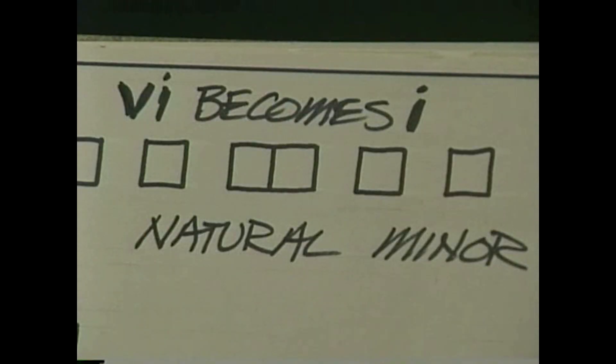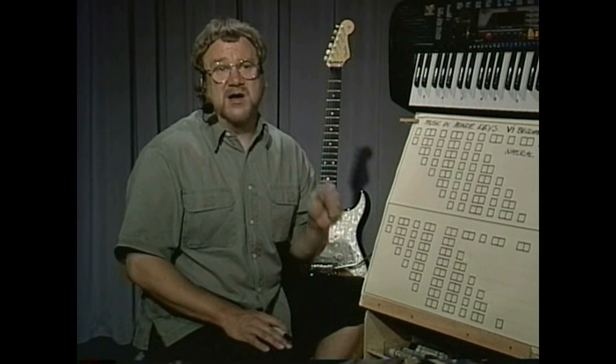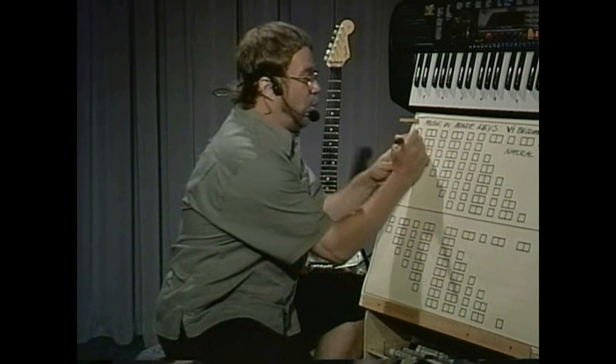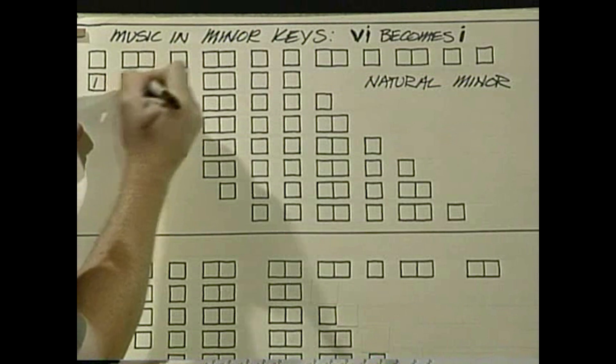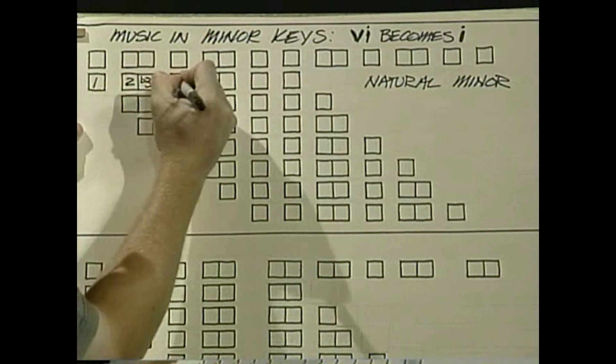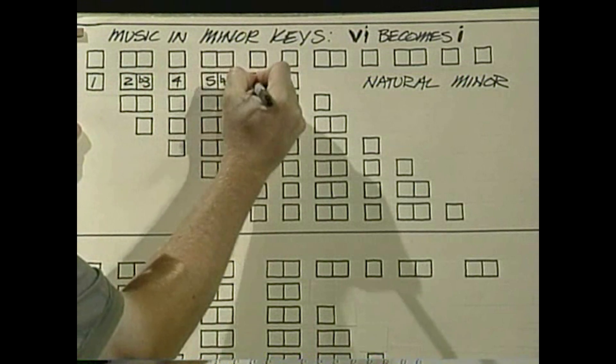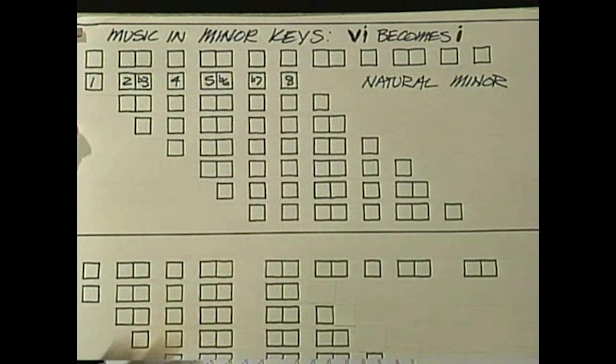We called that scale the Aeolian mode, but we also called it the relative minor, and the natural minor. It is the minor scale that naturally evolves out of the major scale. If you take a major scale and start on its sixth note and examine the pattern of intervals you get, you come up with: one, two, flat three, four, five, flat six, flat seven, eight. This is the natural minor scale.